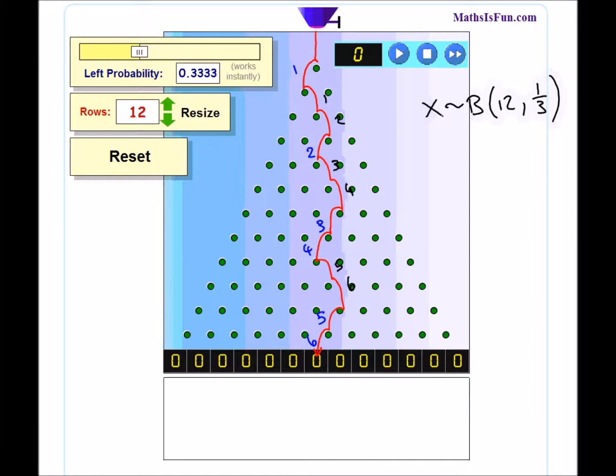The cells at the bottom show me how many successes I've had, so if I end up in the far right cell that's no successes, one success, two successes, three successes, and so on through to ten successes and beyond.